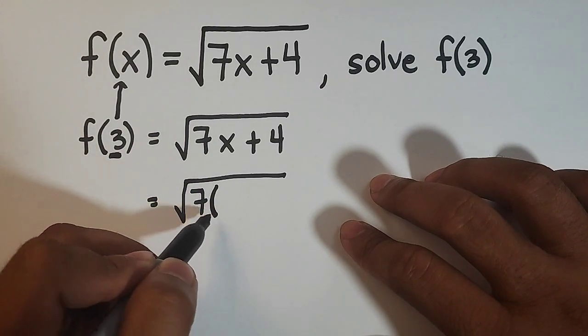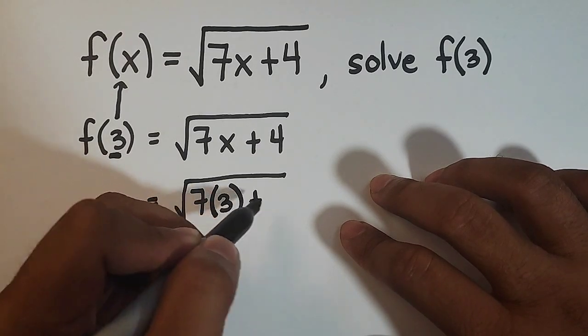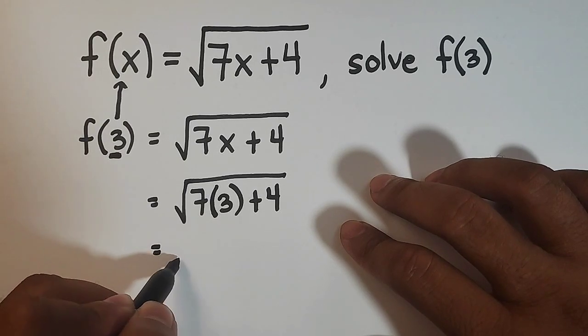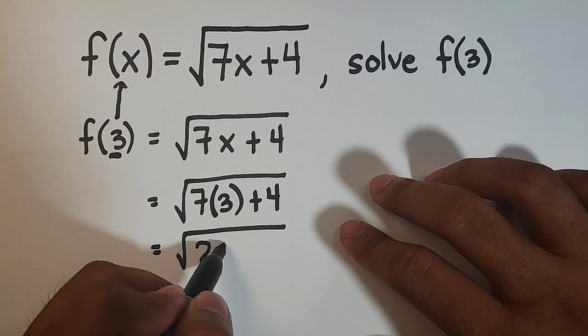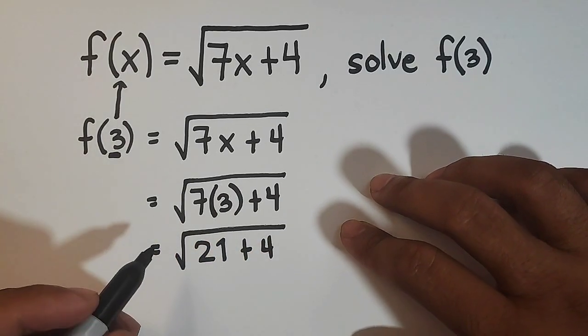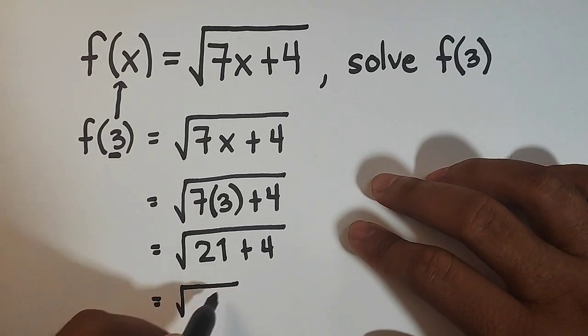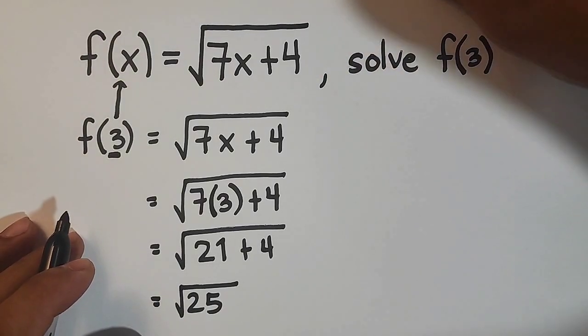You need to simplify the radical. You have 7 times 3, which is 21, plus 4, and 21 plus 4 is equal to 25.